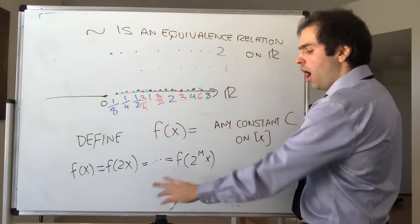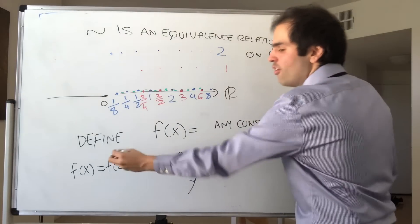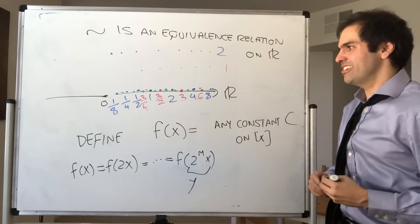So the point is, if y is equivalent to x, so if y is 2 to the mx, then f of y equals f of x. So there is no contradiction here.